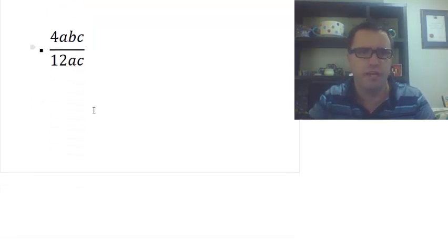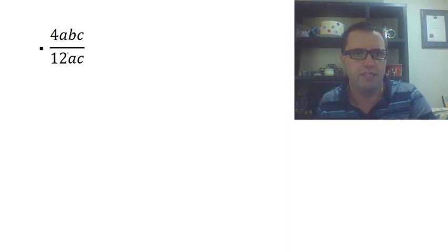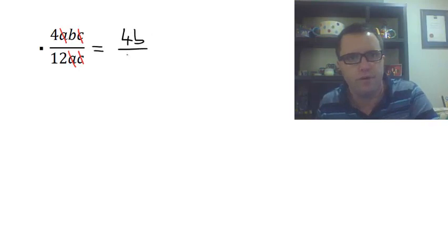However, this bottom example has something for us to think about: 4abc over 12ac. Let's have a look at our letters. We've got an a on the top and an a on the bottom, a c on the top and a c on the bottom. Once you've worked on your letters, then rewrite it. So I've got 4b over 12.